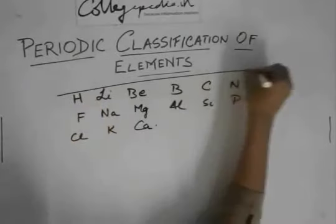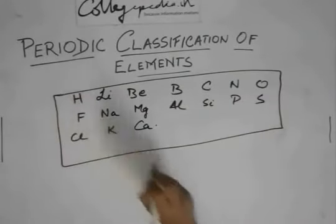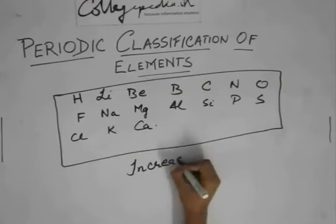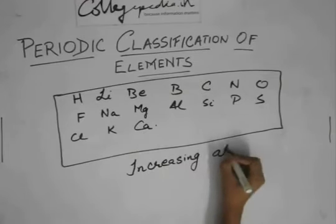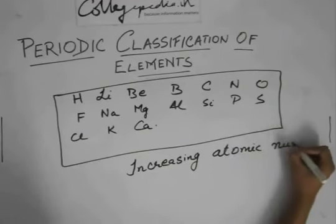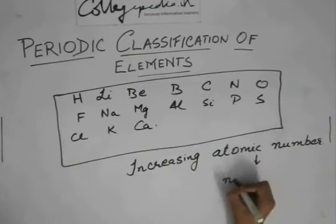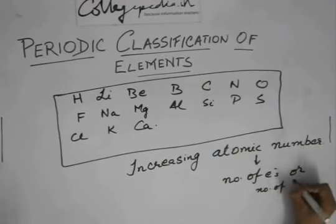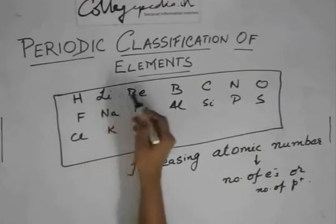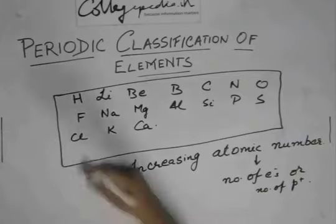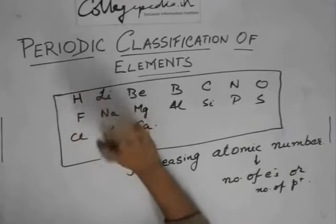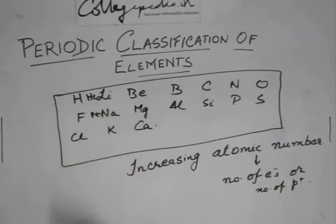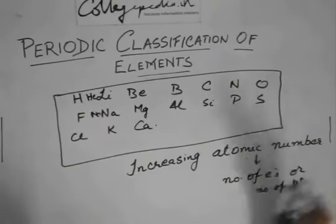You have to remember this table. And one very important thing: this table is according to increasing atomic number. Know what atomic number is? It is nothing but the number of electrons or number of protons. Hydrogen is one, lithium is three. There is a helium in between. And then there is a neon over here.